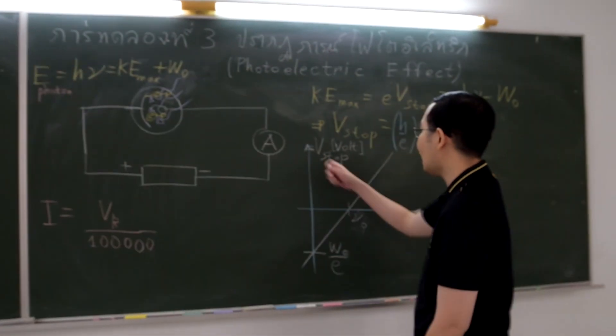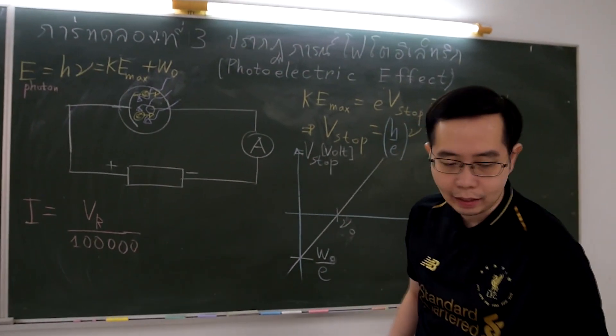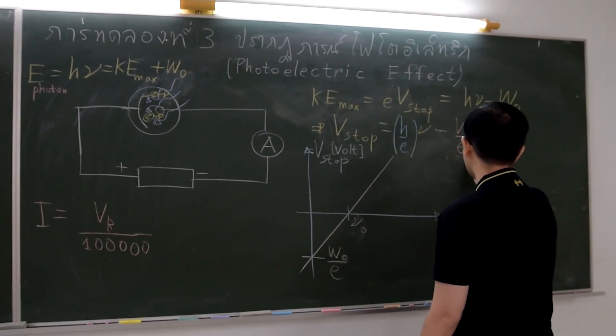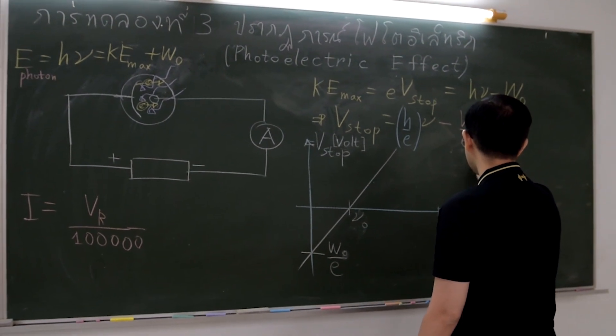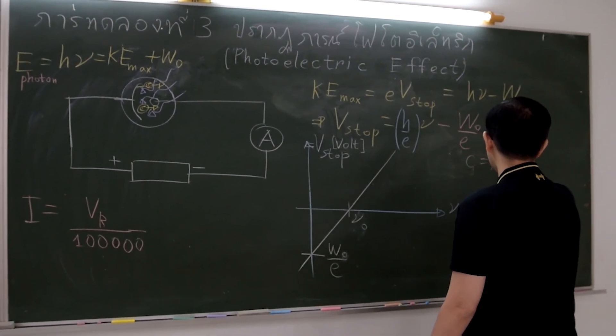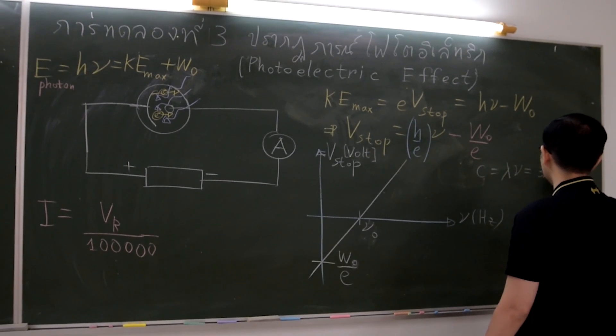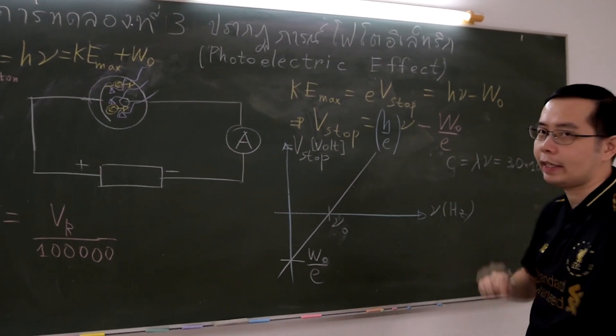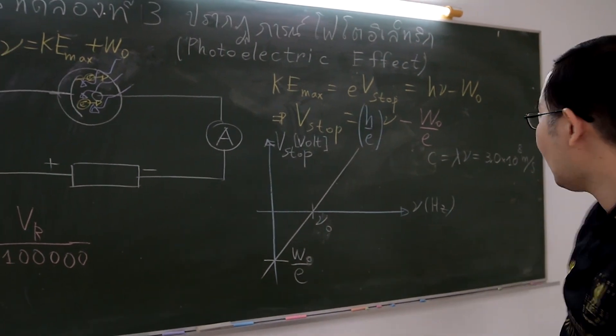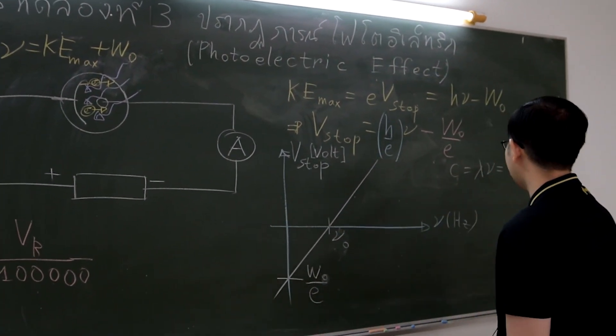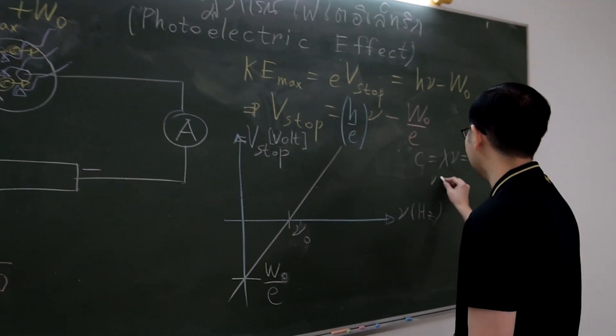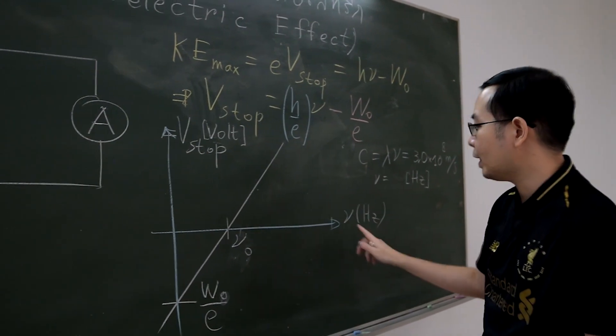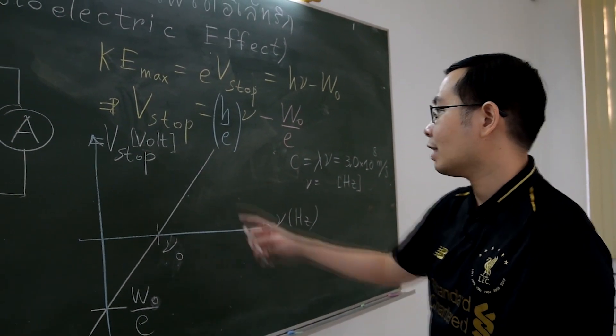Then plot graph between the stopping potential as y-axis and the light frequency as x-axis. The frequency can be calculated from the equation that the light speed equals the wavelength times frequency. The light speed is 3 times 10 to the 8th. Use the wavelength obtained from the experiment to find the frequency. Do not forget to convert the prefix nano, which is 10 to the negative 9th. The frequency unit is hertz, which must be denoted on the x-axis.